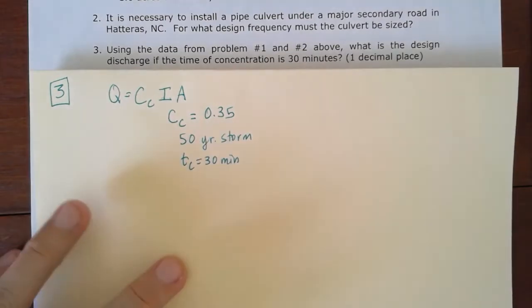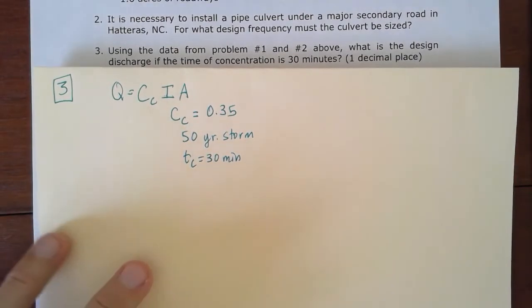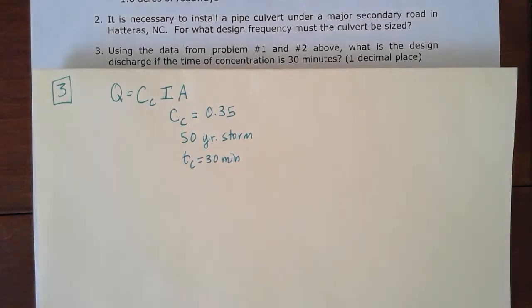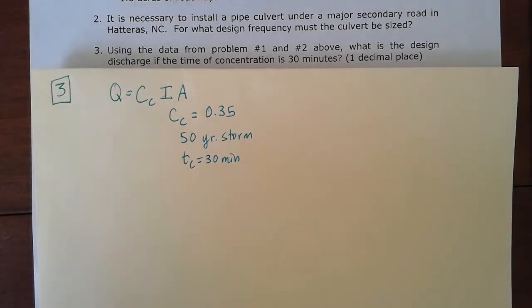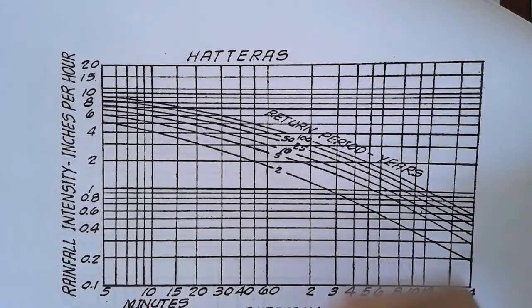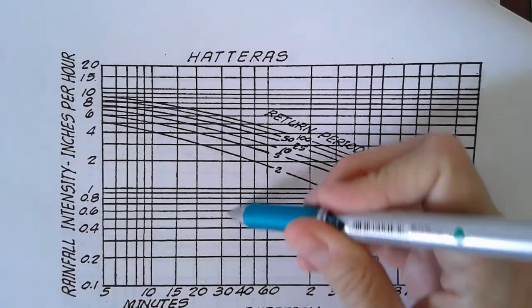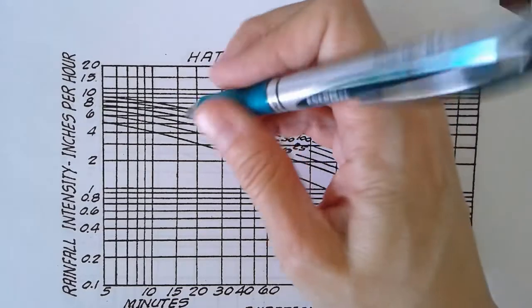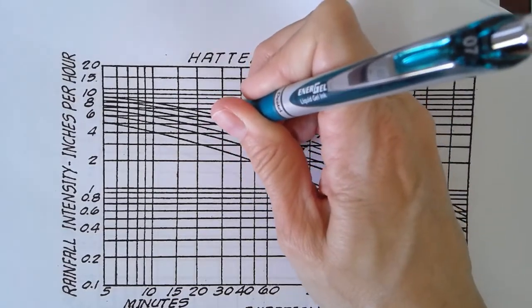So with that information, we can go onto our intensity duration frequency charts, our IDF chart for Hatteras here. And if we know our time of concentration is 30 minutes, we're going to come up here to where it intersects our 50-year storm, so that's our second line coming down here.